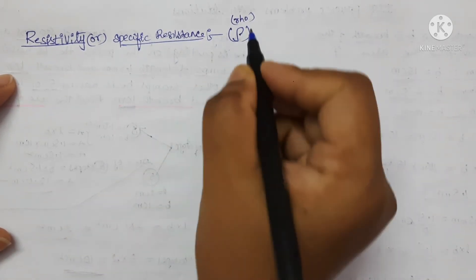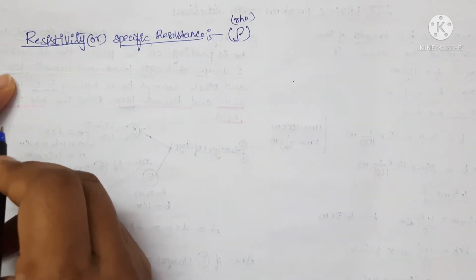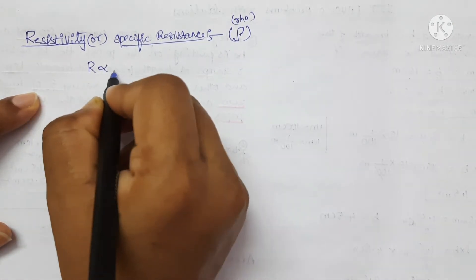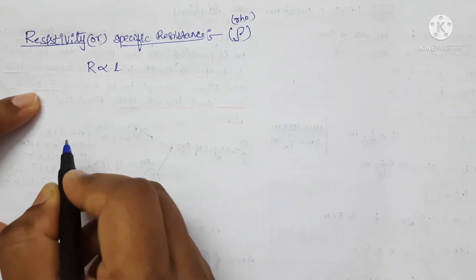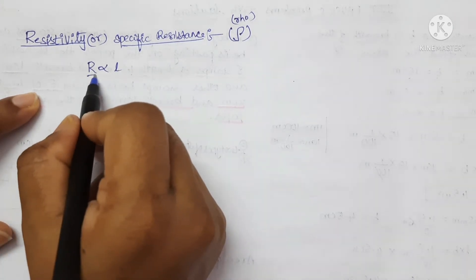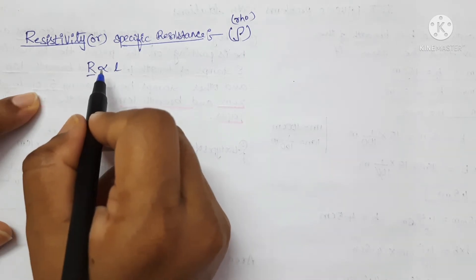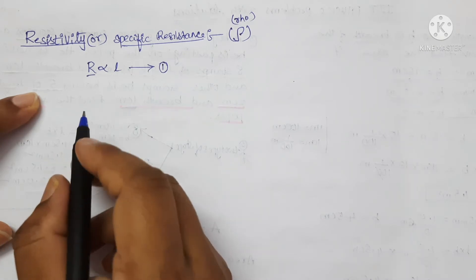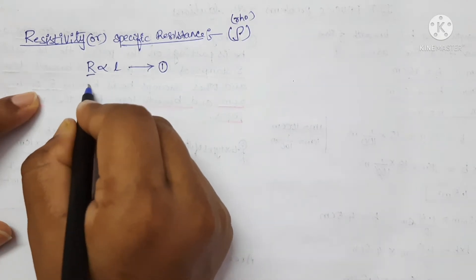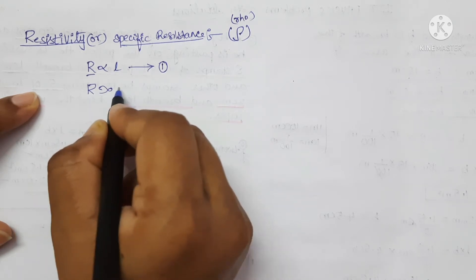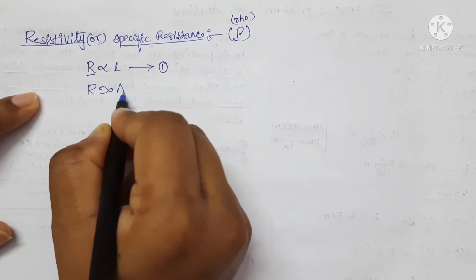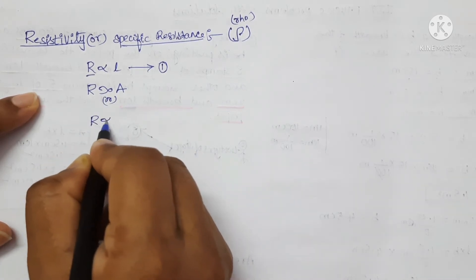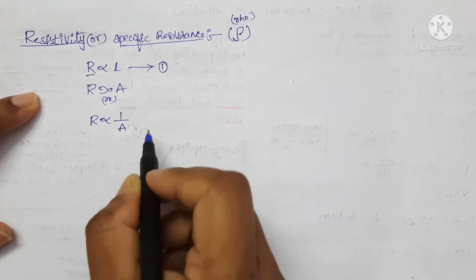Now let us write the formula for specific resistance. Resistance of a conductor is directly proportional to its length — let that be equation number 1. And also, resistance is inversely proportional to area of cross section, or this can also be written as resistance is directly proportional to 1 by A — let that be equation number 2.